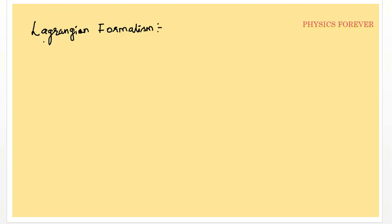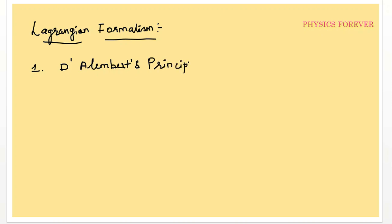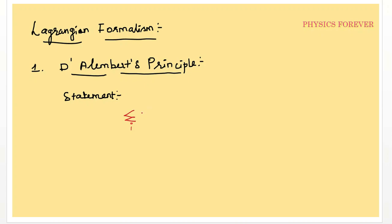So the Lagrangian Formalism. First, D'Alembert's principle - let me tell you the statement. The most important equation is: summation over i of (F_i minus m_i times a_i) dot delta r_i, which is equal to zero. This is how we define the statement of D'Alembert's principle.